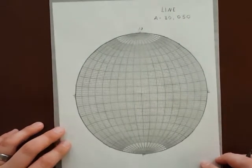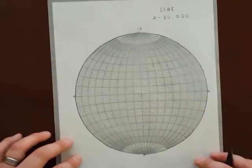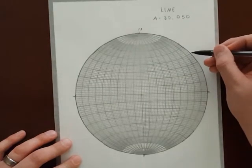Trend is just a direction, so I can find that on the primitive circle. 10, 20, 30, 40, 50.